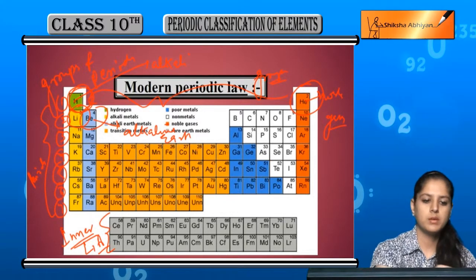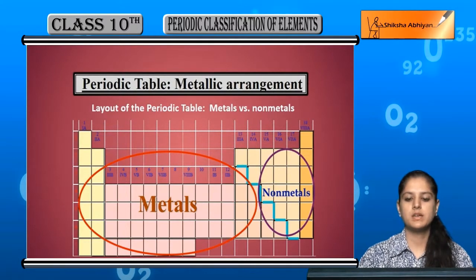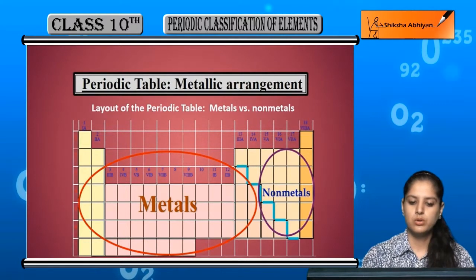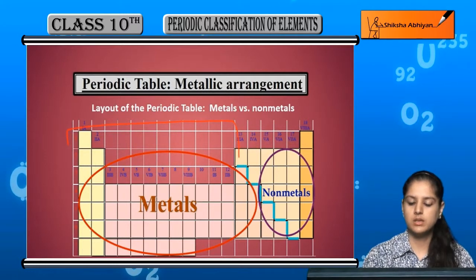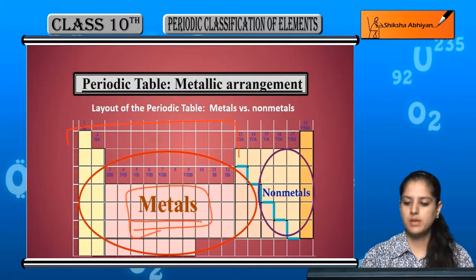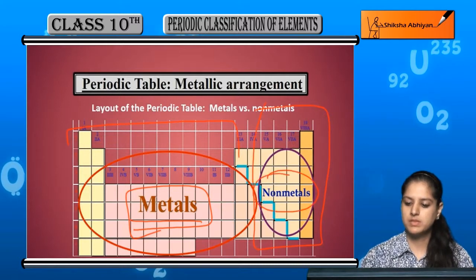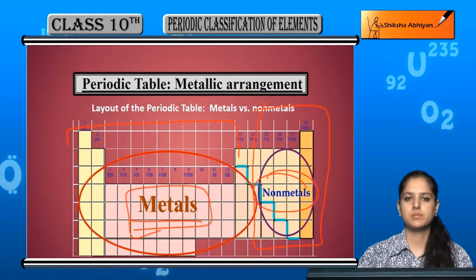If we look at the distribution of metals and non-metals in the modern periodic table, the elements in these initial groups are all metals, and the elements in the latter groups are non-metals.